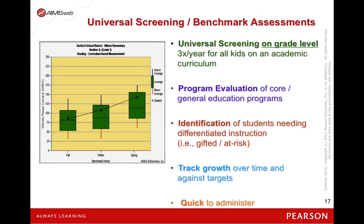Universal screening serves multiple purposes. Some advantages of universal screening include evaluating your core instruction, identifying both gifted and at-risk students, and tracking growth over time. All screening measures are done on grade level. Like DIBELS, the AIMSweb probes are quick and easy to administer.